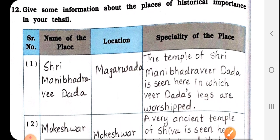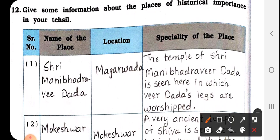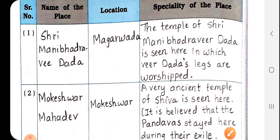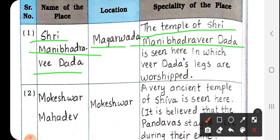Question number 12: Give some information about the places of historical importance in your tehsil — name of the place, location, and specialty. Number 1: Mani Bhadra Virdada, located at Magarwada. Specialty: the temple of Shri Mani Bhadra Virdada is here, where Virdada's feet (paro) are worshipped.